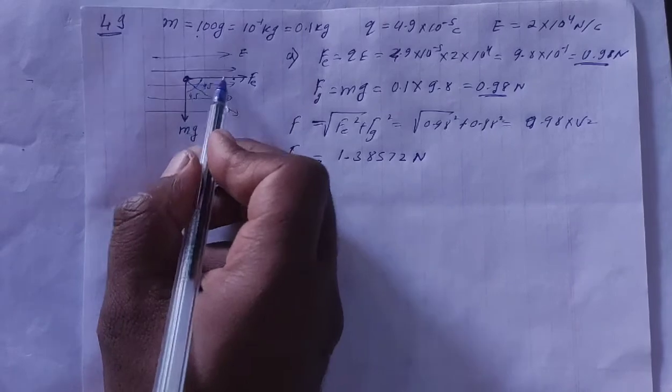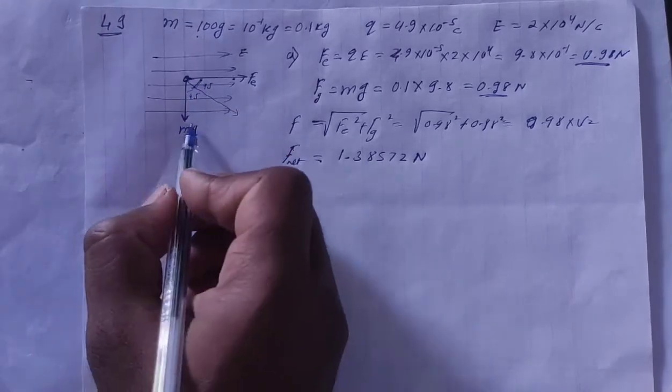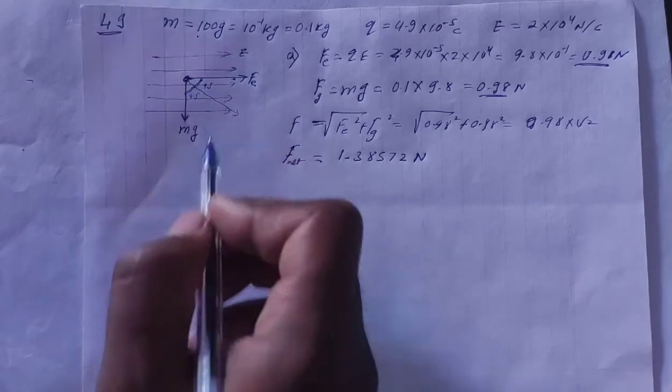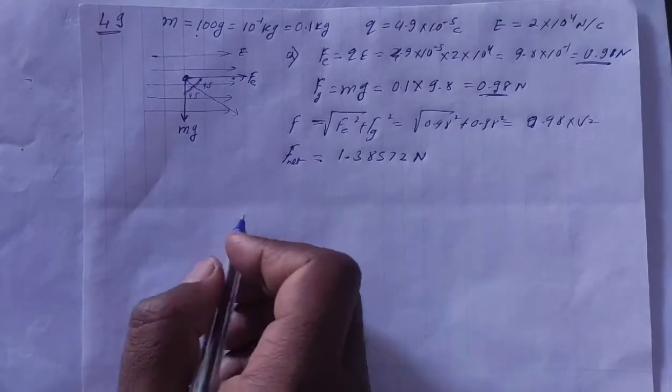That is, this will be your net force. And what is the direction? From electric axis 45 degrees downward. Or from Mg, which is the gravitational force, from that right 45 degrees. This will be your net force.